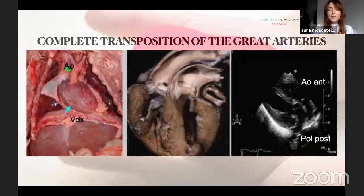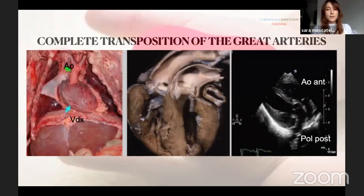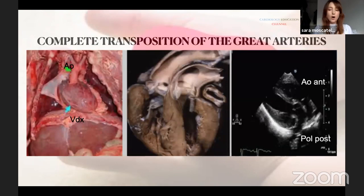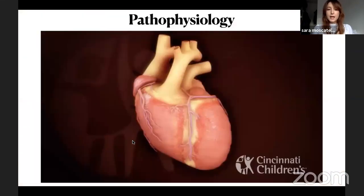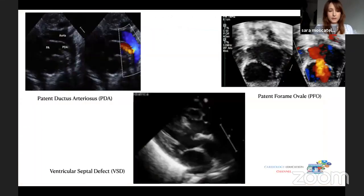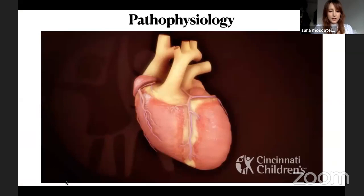These images illustrate that the aorta is on the right side and arises from the right ventricle. In both autoptic and echo imaging, the great arteries run parallel to one another — a characteristic feature of this condition.